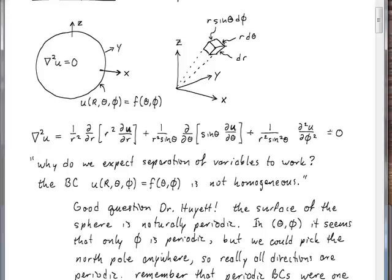So a student asked this excellent question: why do we expect separation of variables to work for solving this problem? The boundary condition in this problem, you can see here, is not a homogeneous boundary condition. And one of the conditions for separation of variables to work was that we had to have homogeneous boundary conditions.